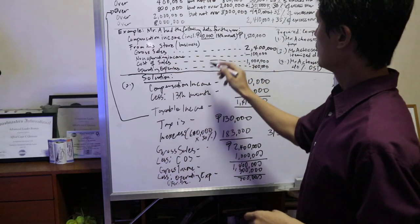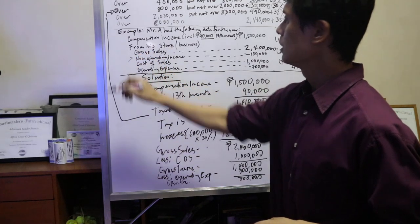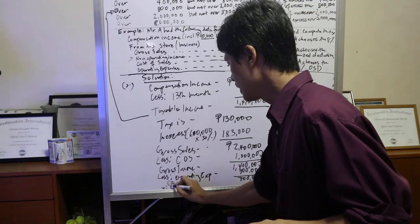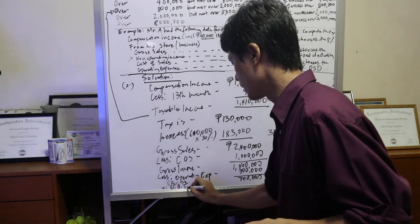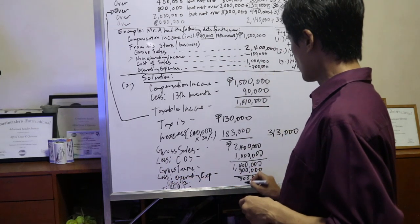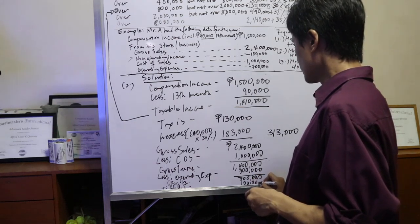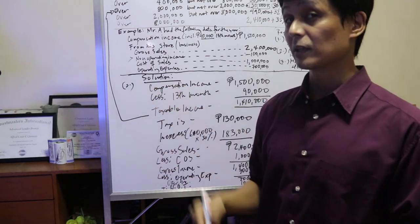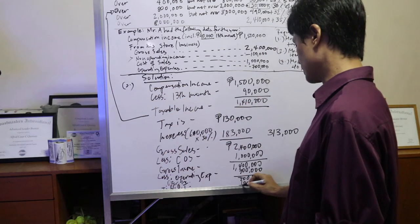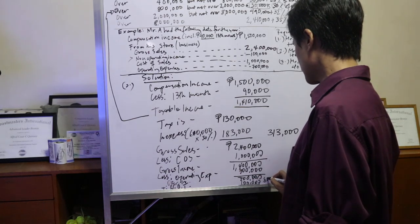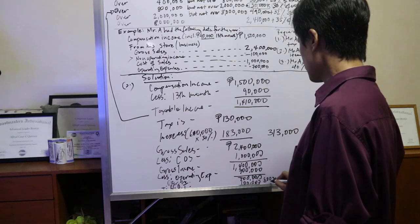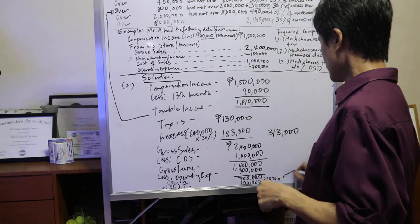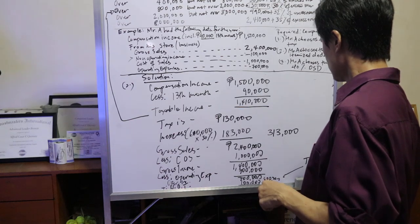Now, meron pa tayong isa pa, yung tinatawag na non-operating income. We'll add that. So add NOI or non-operating income, which is 100,000. 100 plus 700 is 800,000. This 800,000, ito na yung tinatawag natin taxable income. This one is the taxable income.